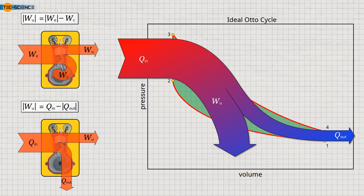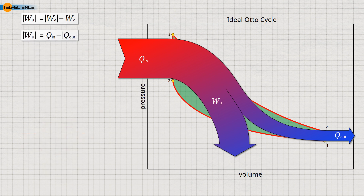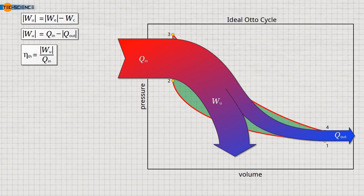From the two energy flow diagrams, we can see that we can determine the useful work in two ways: either by the difference between expansion and compression work, or by the difference between heat added and heat rejected. Note that both work and heat transfers have positive or negative signs, depending on whether energy is being added to or removed from the gas. To avoid misunderstandings, we explicitly use absolute values in the formulas for energies that are actually negative. In the context of environmental impact, the efficiency with which the heat supplied during combustion is converted into useful work is of primary interest. This thermal efficiency represents the ratio of useful work to heat input — for example, a thermal efficiency of 0.6 means that 60% of the input heat energy is converted into useful work.